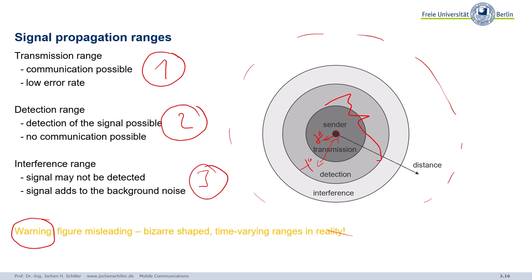This figure is a bit misleading because in reality, the transmission range is rather something like this bizarre shaped figure, also detection range, et cetera. And these bizarre figures, they even vary their shape over time. This depends on if you move in space, whether other persons, many other effects for the propagation of signals. So in vacuum, it would look like this figure with a nice sphere. But in real life, it looks different. Why?